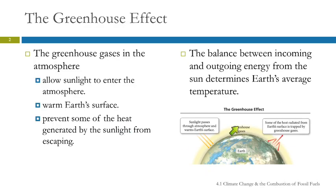Greenhouse gases are in the atmosphere. Sunlight passes through the atmosphere — not all of the sunlight, but most of it. And then when it strikes the Earth, it heats the surface. The greenhouse gases sort of act as a blanket and keep that heat from escaping. So we have this balance between incoming energy from the sun and outgoing energy getting through the greenhouse gases, and that determines the Earth's average temperature.